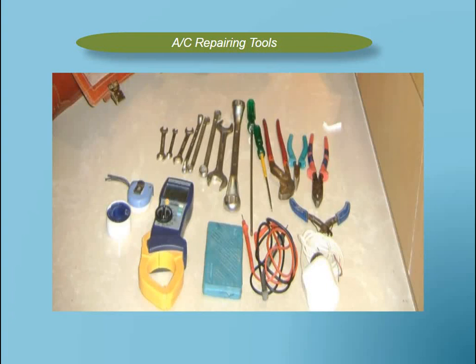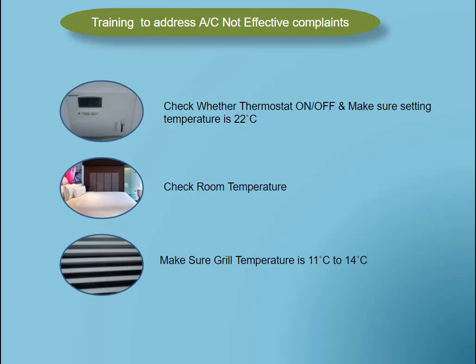We will move to the AC complaint. If the technician wants to address the AC complaint, he first prepares the required tools, which he should keep inside his CanFixit trolley and bag. To address the AC complaint: check whether the thermostat is on or off, and make sure the setting temperature is 22°C or 24°C as required by the brand or for guest comfort. Second, check the room temperature and make sure the grill temperature is between 11°C and 14°C. These are the simplest things to start with.